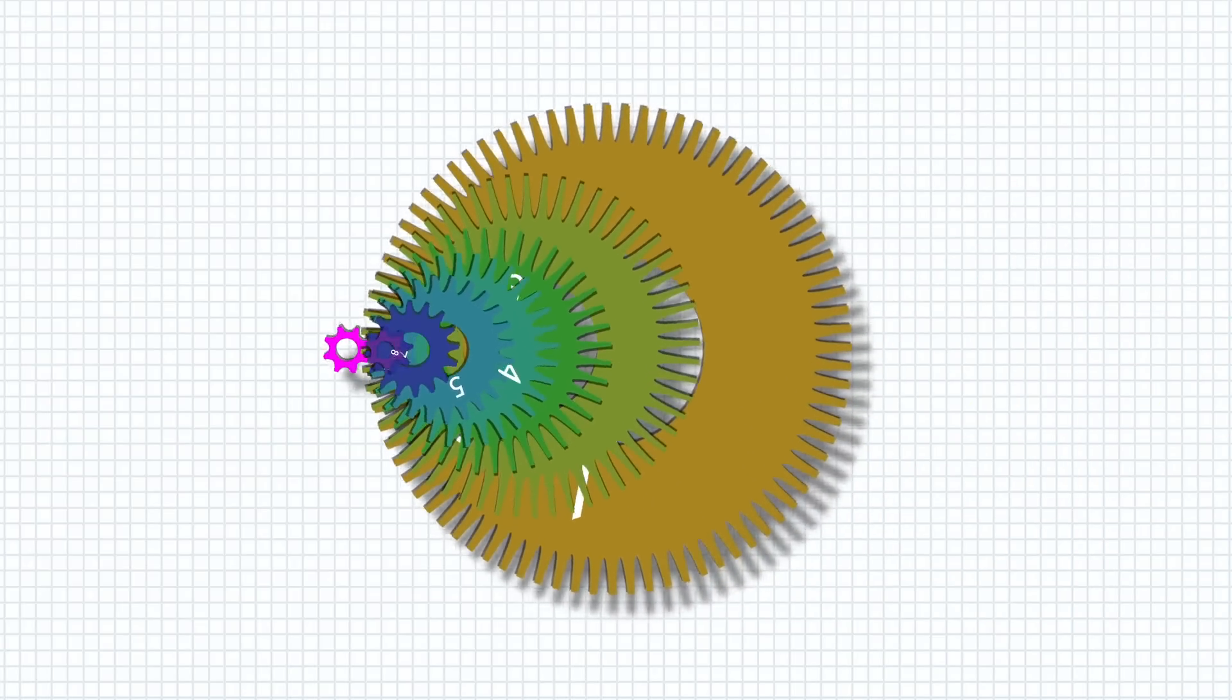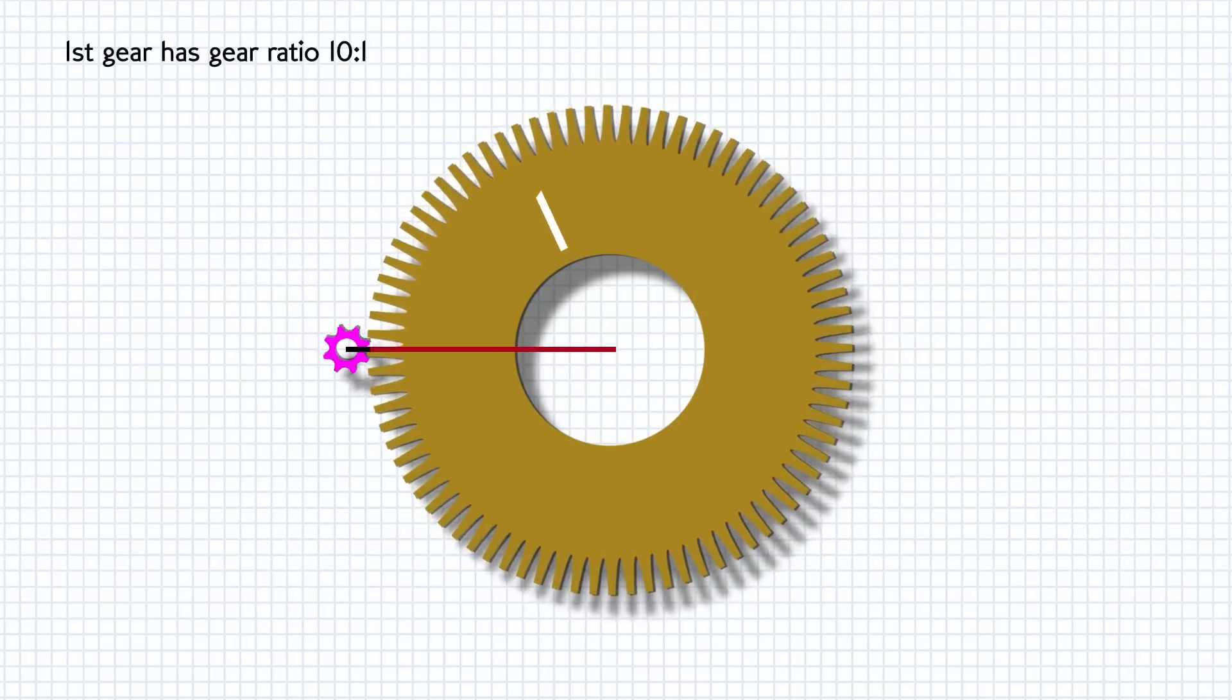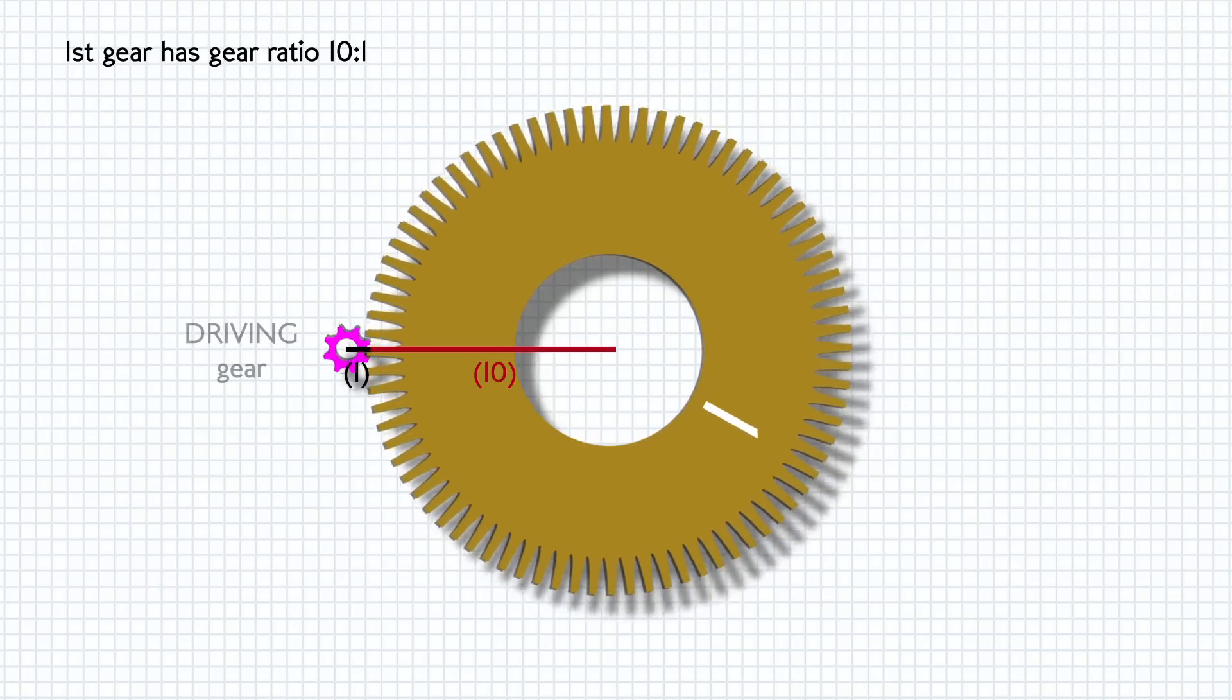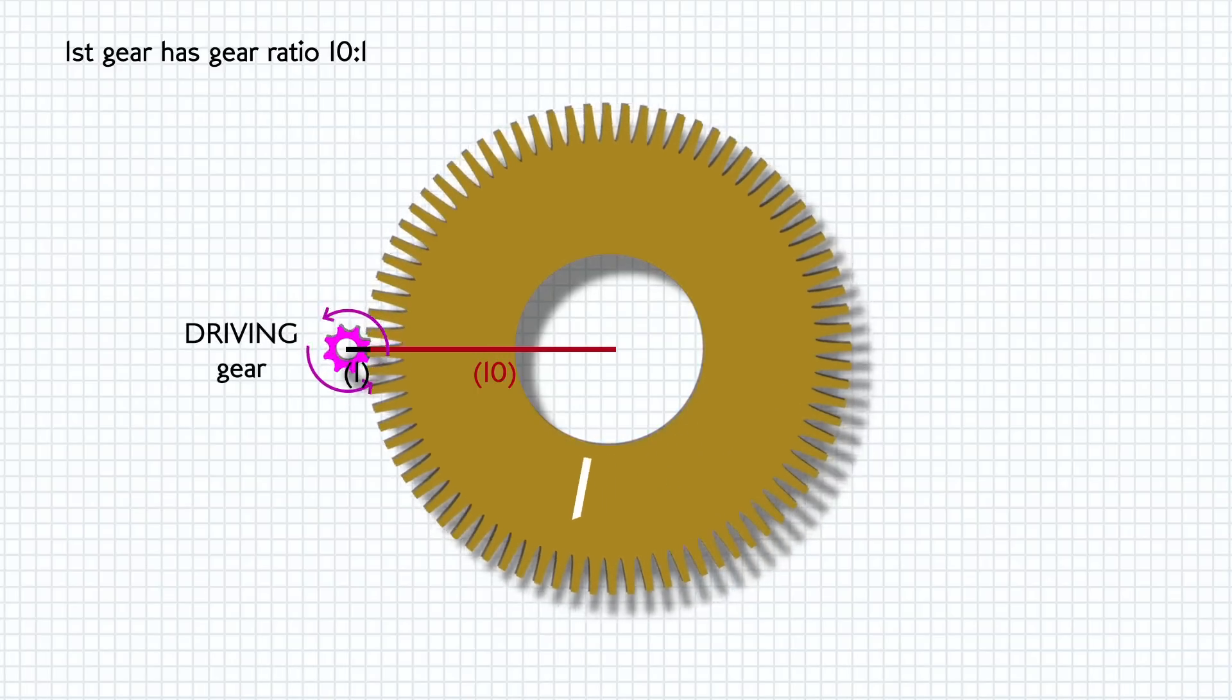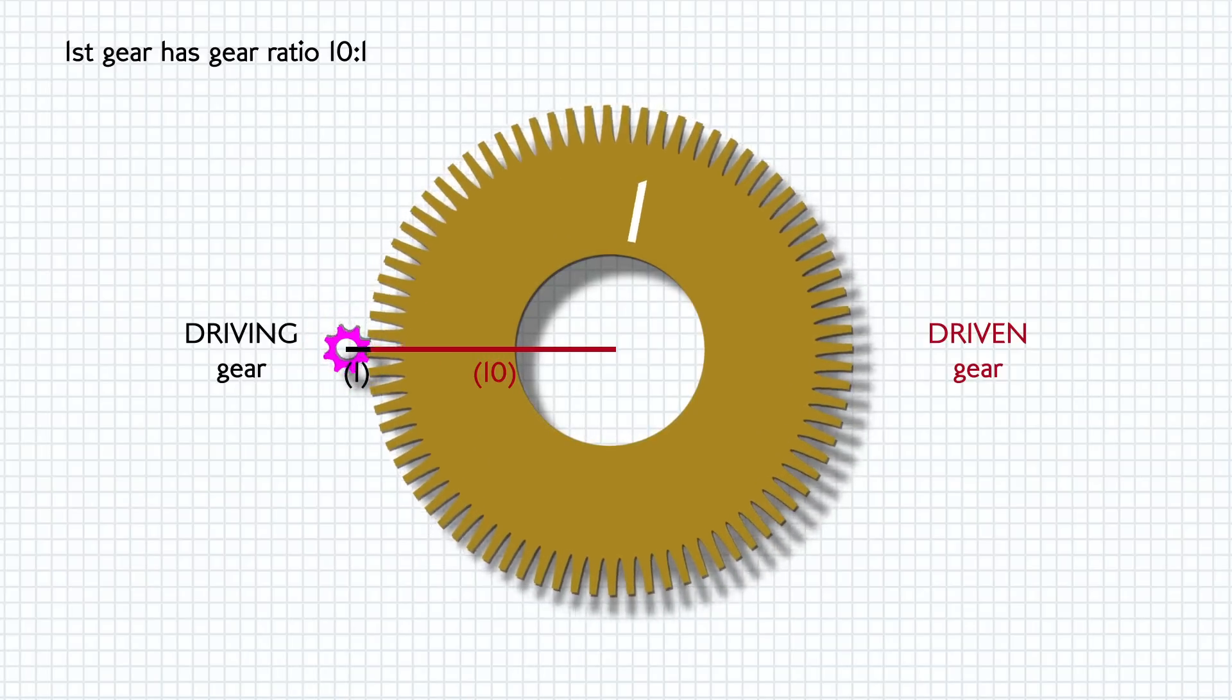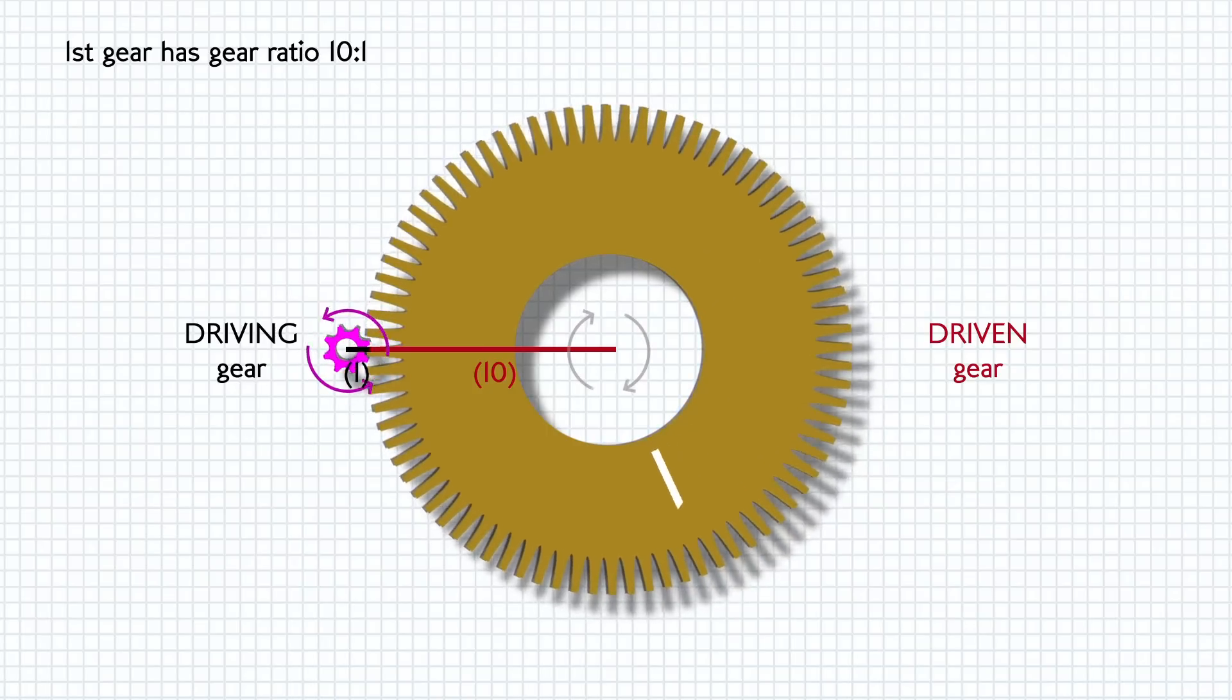Let's keep it super simple and say we're in first gear and that first gear has a gear ratio of 10 so it's ten times bigger than the gear at the crankshaft. Now when the gears connect there is a driving gear and that's the one with the power going through it and a driven gear and that's the gear that gains power from the driving gear when they connect. So in this case the driving gear is the one at the crankshaft and it's driving the first gear here.